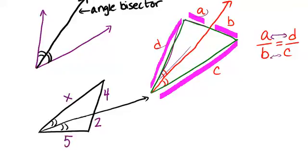So in this triangle, we have one of the angles has been bisected by this ray. So a proportional relationship exists. That is, four over two has to be the same ratio as x over five.